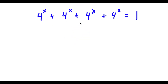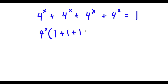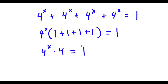Alright, so I have 4 to the power of x plus 4 to the power of x plus 4 to the power of x plus 4 to the power of x is equal to 1. Now, the first thing I'm going to do is I'm going to factor out 4 to the power of x from my left-hand side. So I have 4 to the power of x times 1 plus 1 plus 1 plus 1, and this is equal to 1. Now if I simplify what's in the parentheses, I get 4. So now I have 4 to the power of x times 4 is equal to 1.